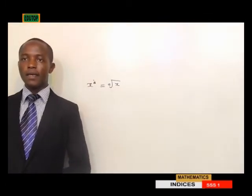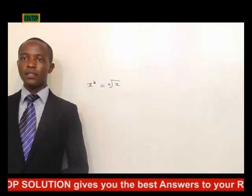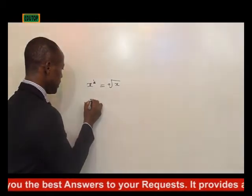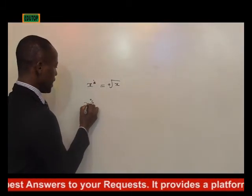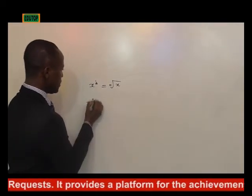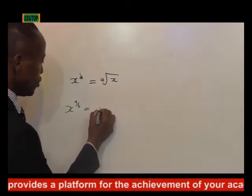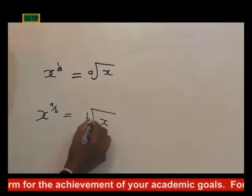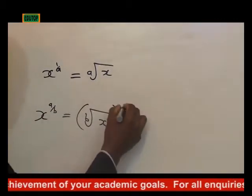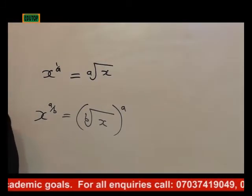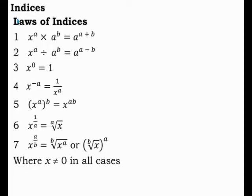Alternatively, it can be written as B root of x, everything raised to the power A. So when we have x raised to the power A over B, this B will be our root of x, then everything raised to the power A, where x, in all cases, is not equal to 0.